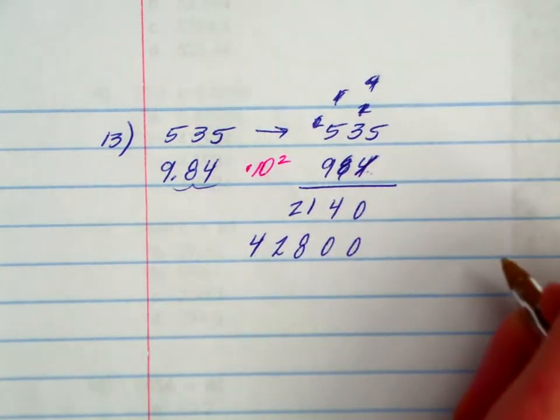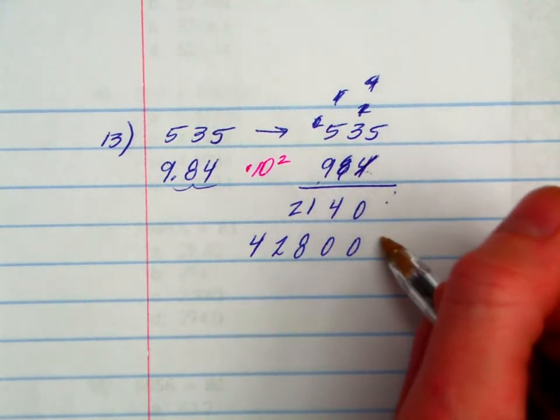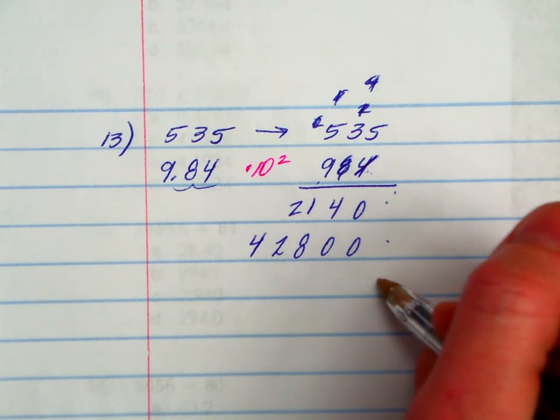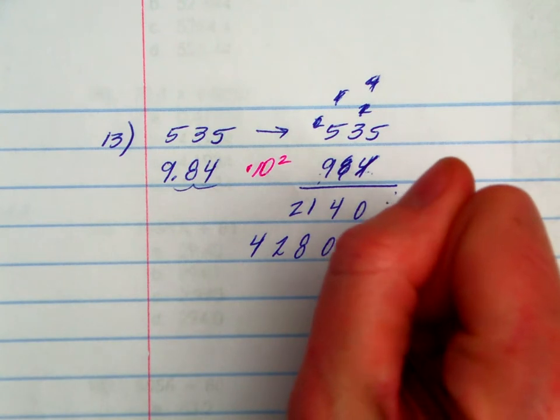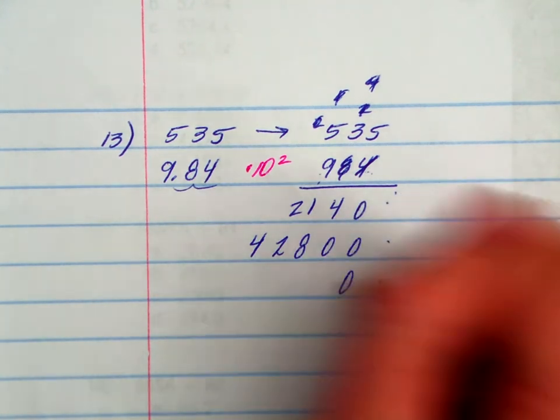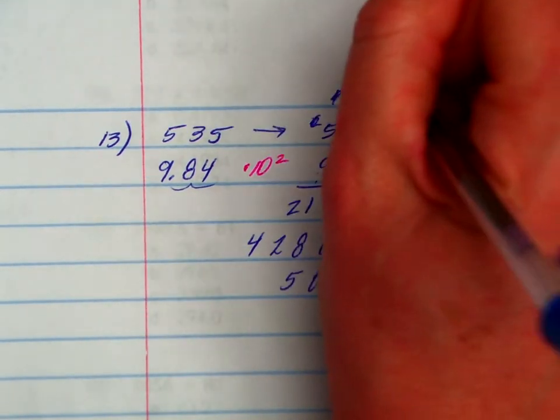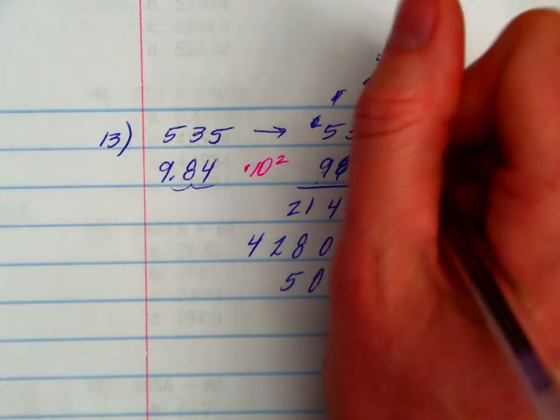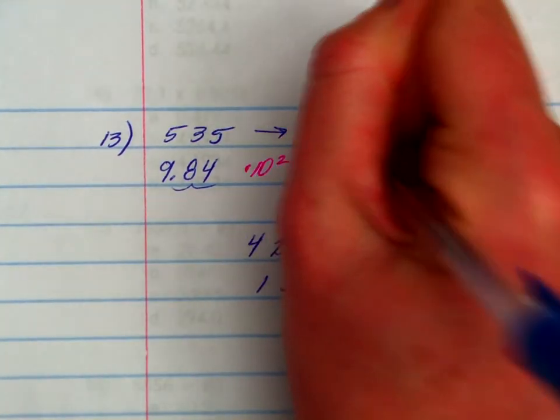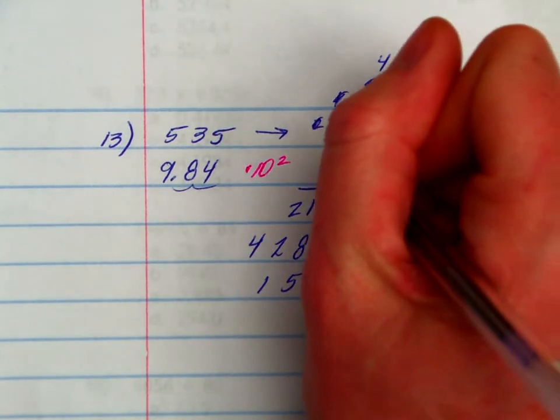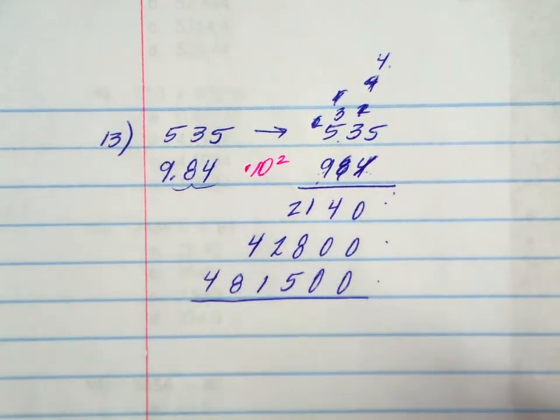Now I'm only in the 100's place. I only have one more partial product to go. Partial product for the 1's place. Partial product for the 10's place. Now we're going to do partial product for the 100's place. I'm doing fantastic. 9 times 5. Well, I can't put that here, because I need to put some placeholders. That was the 1's place, 10's place. 9 times 5 is 45. Put down the 5, carry the 4. 9 times 3 is 27, plus 4 is 31. Put down the 1, carry the 3. 9 times 5 is 45, plus 3 is 48. Put down the 8, put down the 4. You have all your partial products.